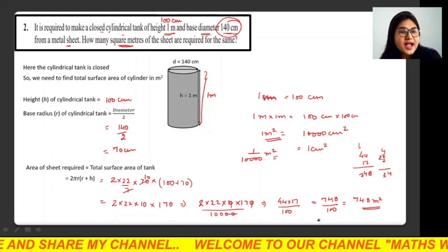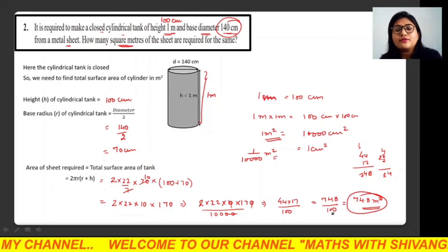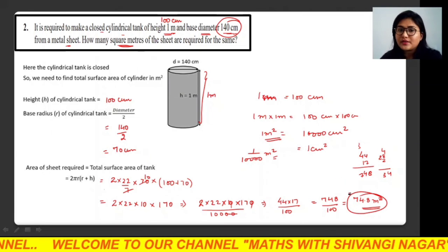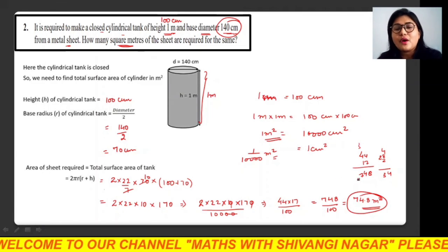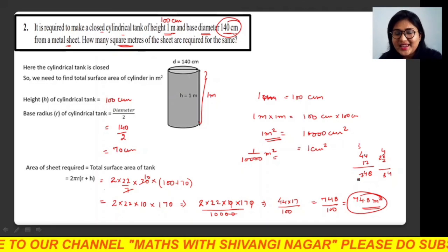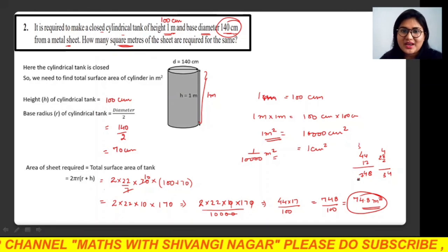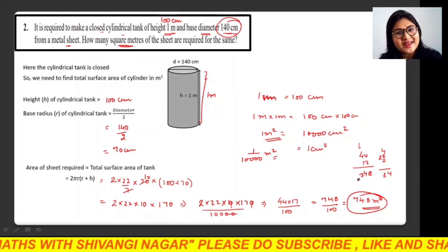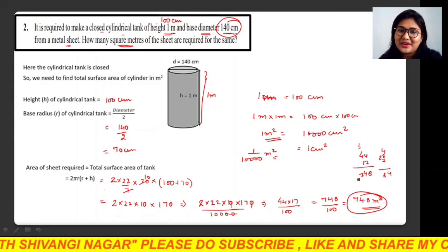So this is your final answer - 7.48 square meters of sheet is required to form this type of tank. So this is all about question number 2. I hope you like it. If you like it, then please like my video.